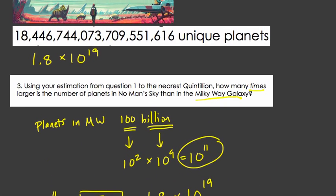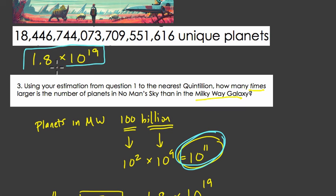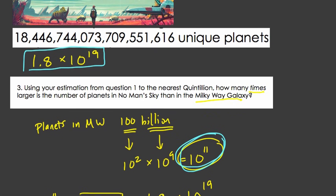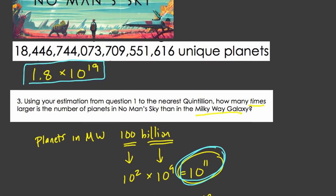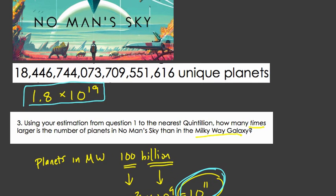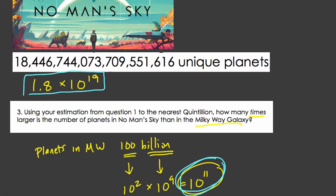This is insane. We multiply the number of planets in the Milky Way by over 200 million to get the number of planets in this video game. And that's just one of the reasons I love thinking about this game, because we can deal with these huge numbers and see that we're exceeding the number of planets in our own galaxy. Thanks.